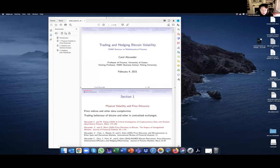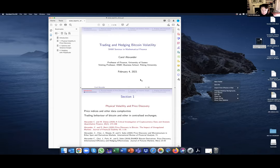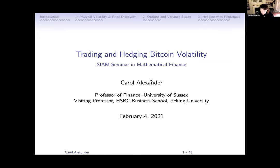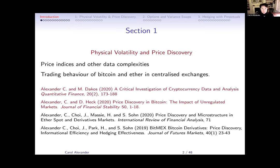There's a bit of maths anyway. So today I'm going to give an introduction to the general area because a lot of people are fairly new to crypto. There are three methodological parts: the first is more or less purely empirical, looking at physical volatility and price discovery, and it's very important to get the right data. Then we'll look at centralized versus decentralized exchange behavior.